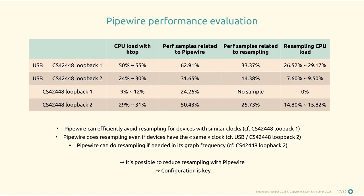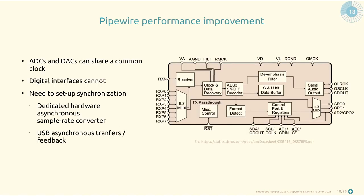What's most interesting is that by marking the 'clock.name' property as the same for interfaces sharing the same hardware clock, we can actually remove up to 30% CPU consumption with proper PipeWire configuration. This means configuration is key — just installing PipeWire and expecting it to work out of the box is not enough.